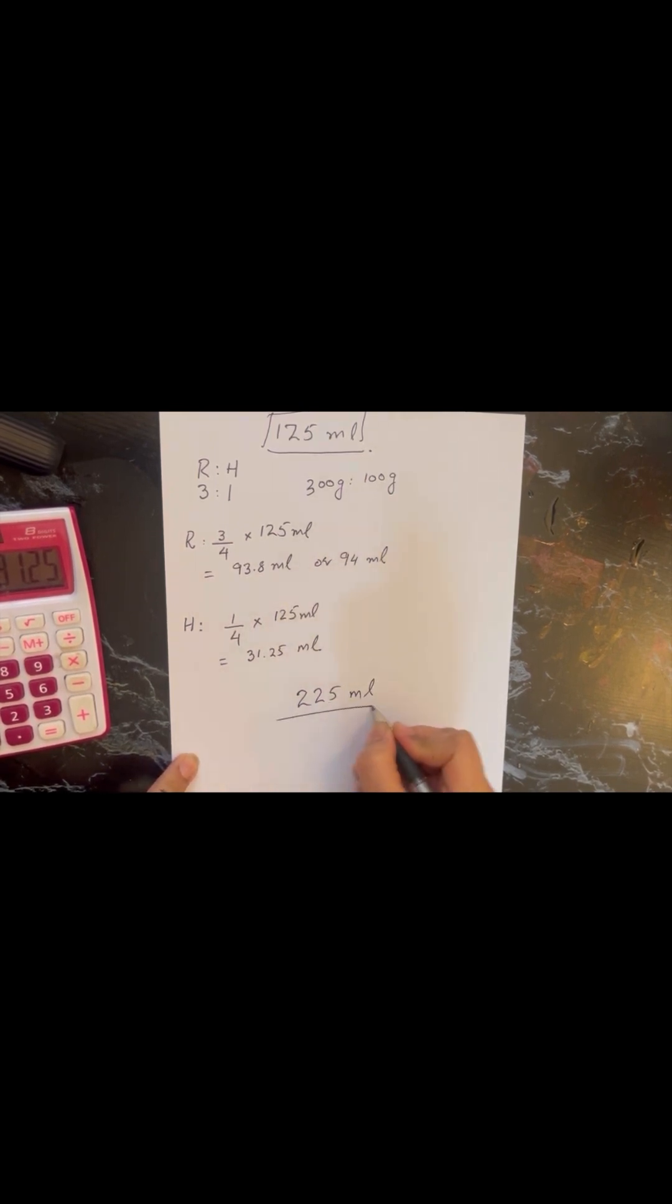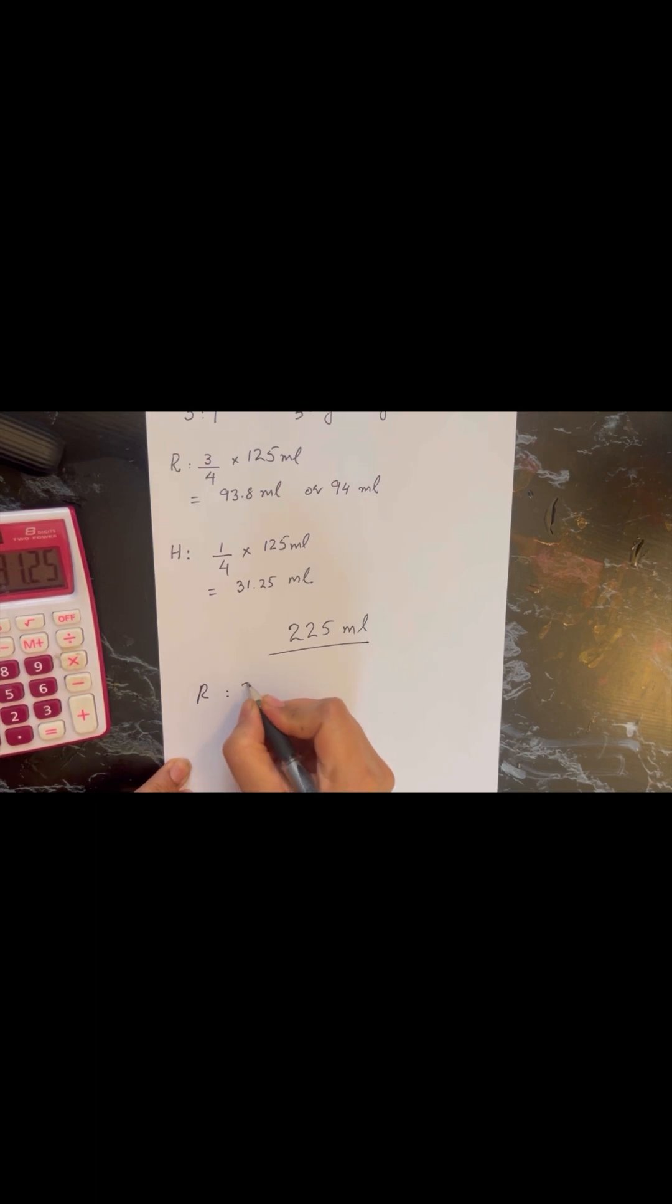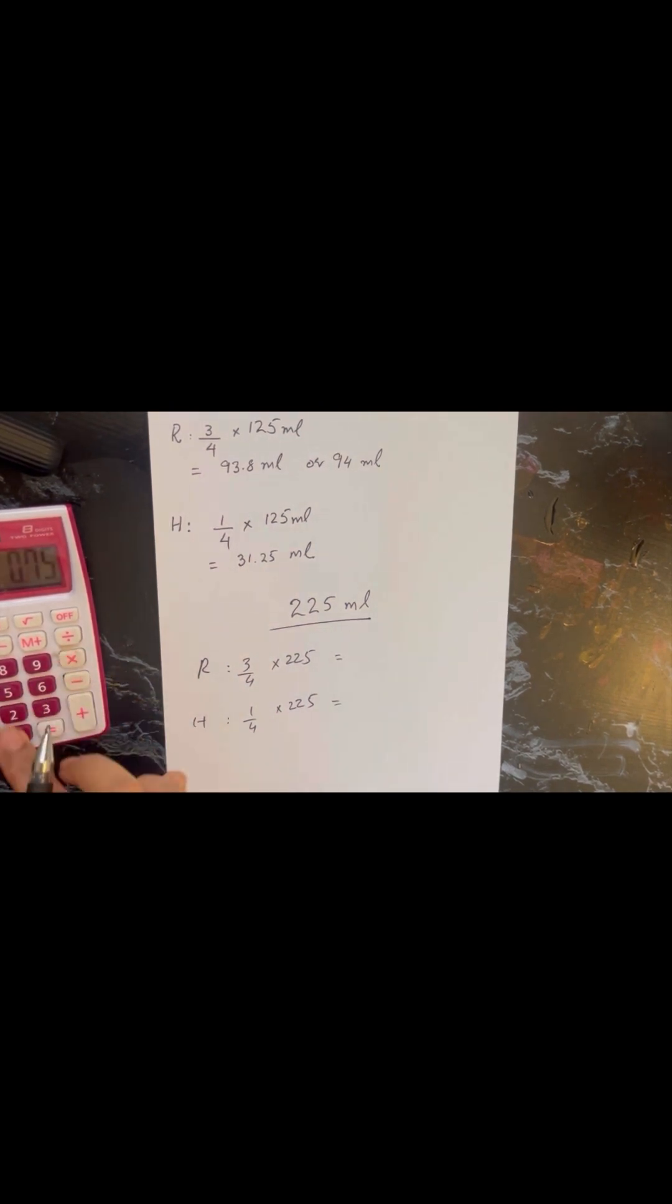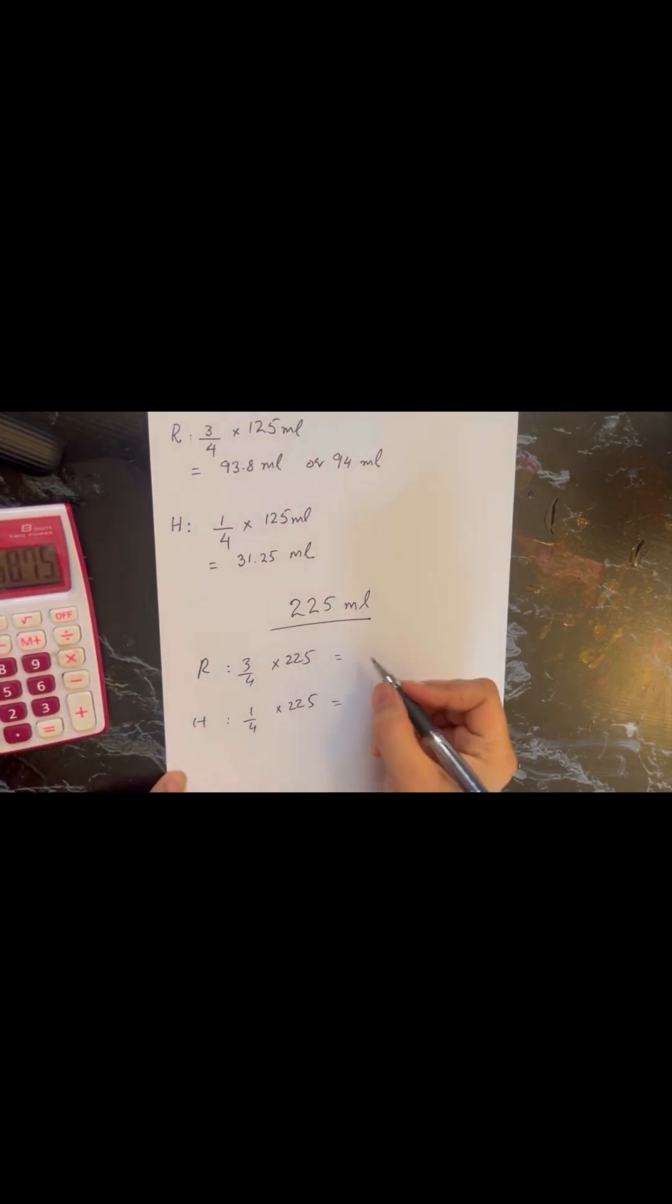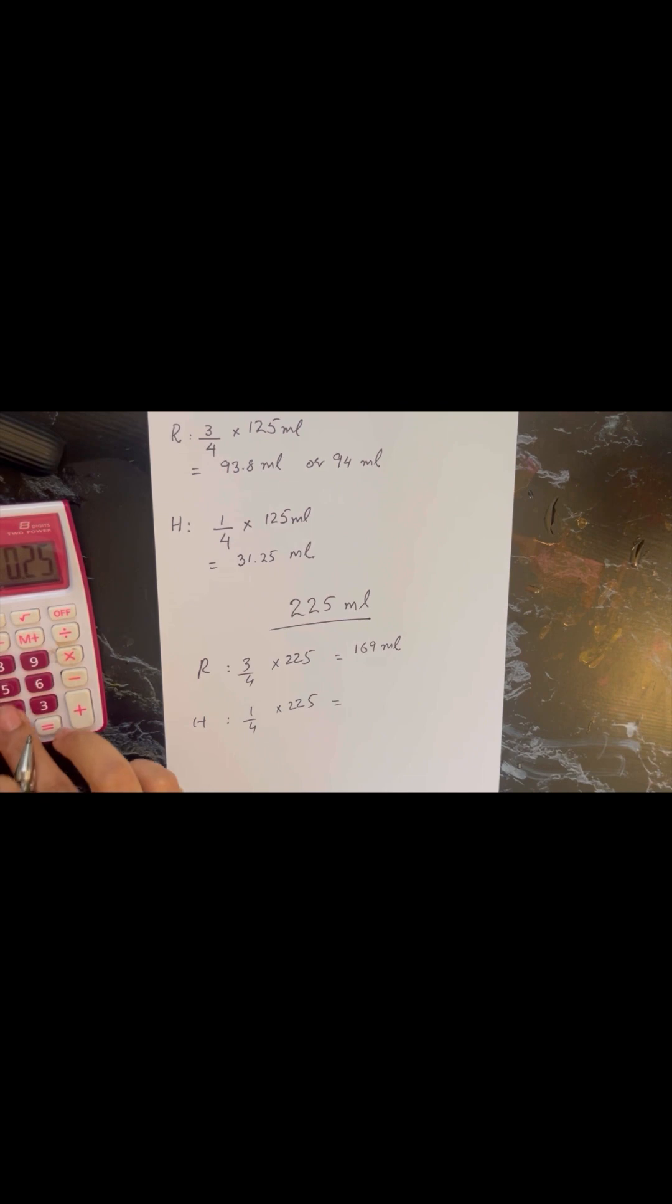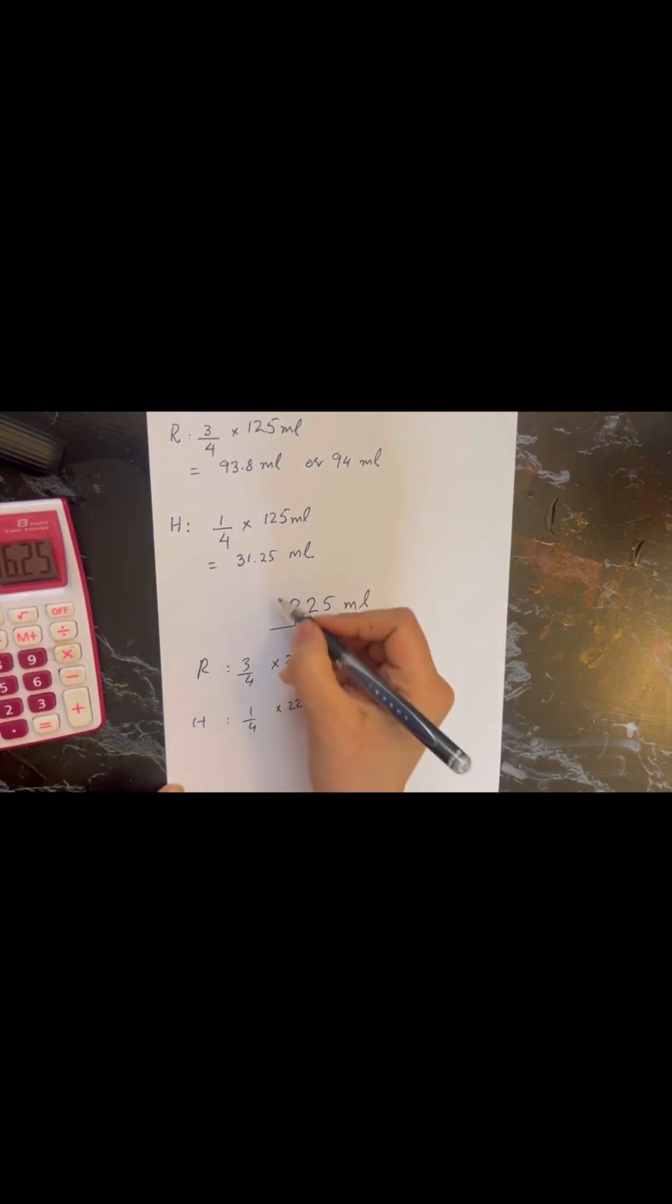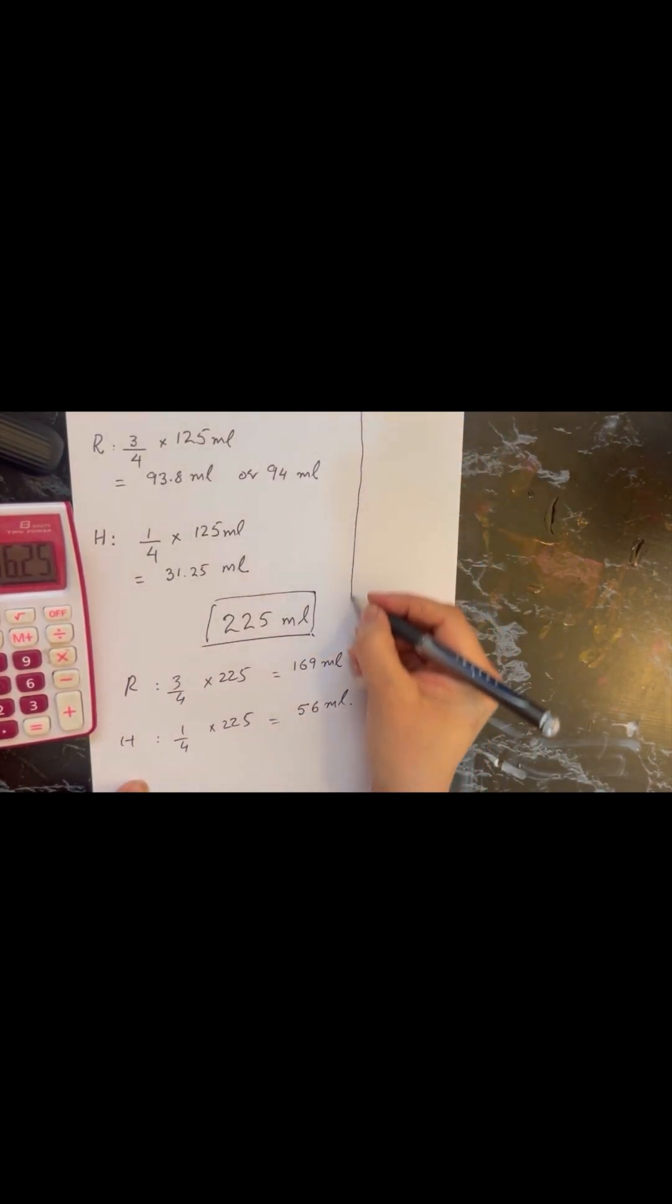This was for 125 ml. Now let's assume that you need 225 ml for your project and you have to calculate your resin and hardener for 3 ratio 1. Now you will repeat the same steps: 3 by 4 times the amount you want to make. This will give you the amount of resin and 1 by 4 times the amount you want to work with. The amount we are working with here is 225, so the resin is 169 I have rounded it up, and hardener is going to be 56 ml for this 225 ml.